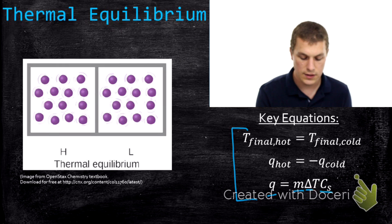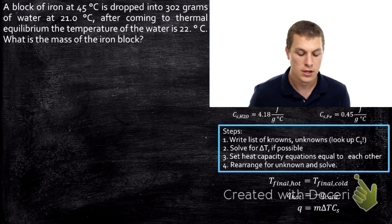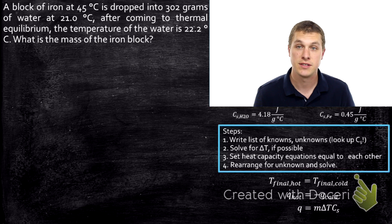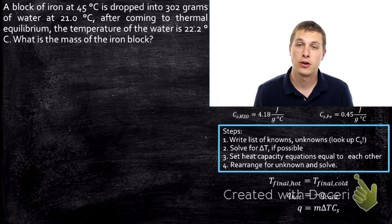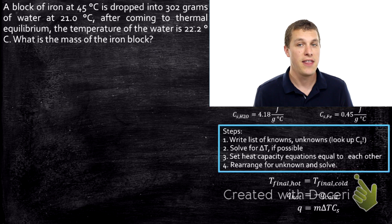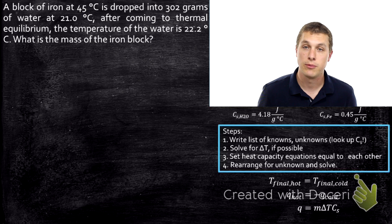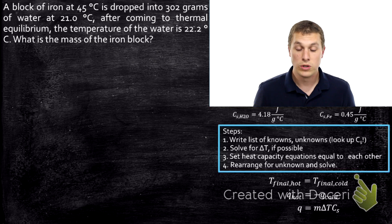When we combine these three equations, we can solve problems like this — a very typical problem you'd see in a gen chem textbook. A block of iron at 45 degrees Celsius is dropped into 302 grams of water at 21 degrees Celsius. After coming to thermal equilibrium, the temperature of the water is 22.2 degrees Celsius. What is the mass of the iron block? This involves heat capacity and thermal equilibrium, and we'll solve it using four steps.